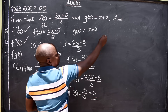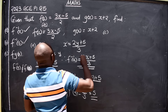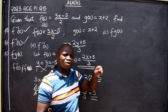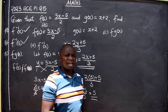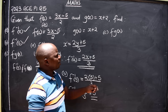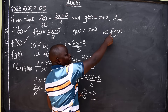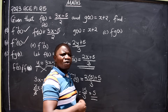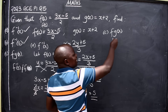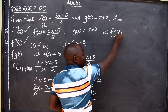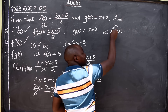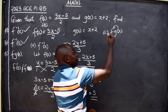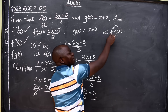We move on to part c. They are saying find f(g(x)) — this is called a composite function. There are two functions combined here: f and g. The key thing to understand is that the second function must go into the first function. Always take note of that — the second function goes in the first function, and it should not be the other way around.